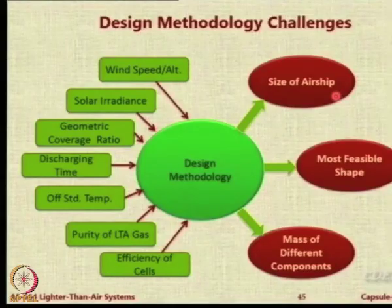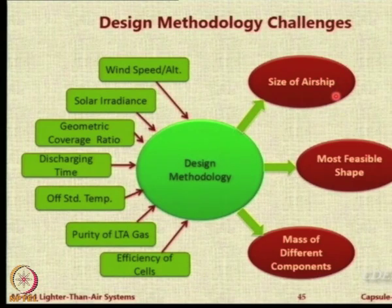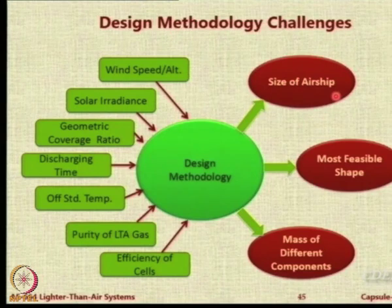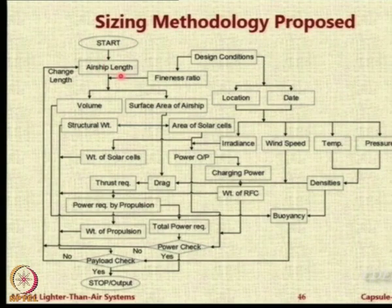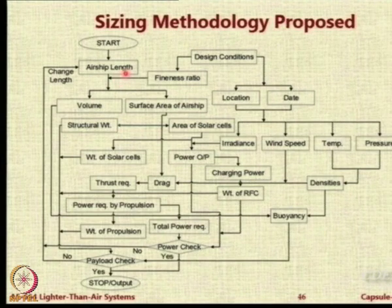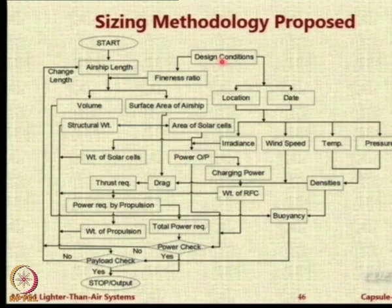The design methodology should also give the mass breakdown of different components — propulsion system mass, structural weight, energy storage, and battery weight. Basically, the sizing methodology proposed starts from a given payload and power requirement, assigns some random initial length, and calculates with the given parameters because you know the location.